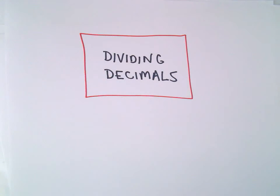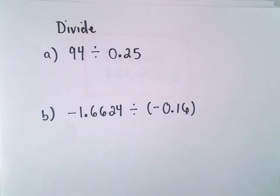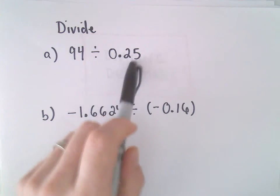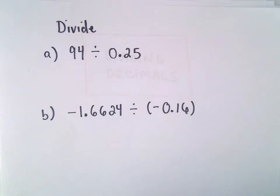All right, in this example we're going to start looking at some problems involving division of two numbers. The basic idea is we're going to rewrite things and get rid of the decimal place in whatever we're dividing by.